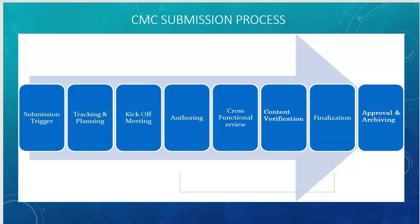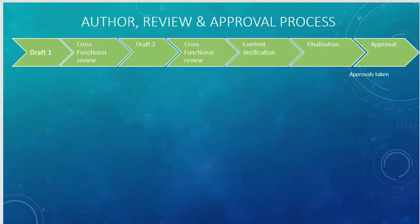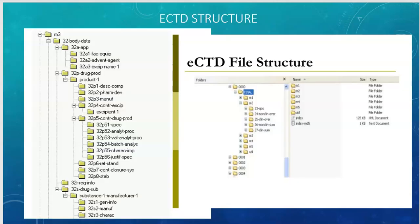In terms of how the authoring and content verification process works, every company uses a Draft 1 — you send it out for review, receive comments, resolve those comments, and generate a Draft 2. Draft 2 goes for higher-level review. Once finalized with no more comments, it goes for content verification and finalization, then you take approvals from each department. The eCTD structure has drug product and drug substance sections, and within each of those it follows this hierarchical structure.